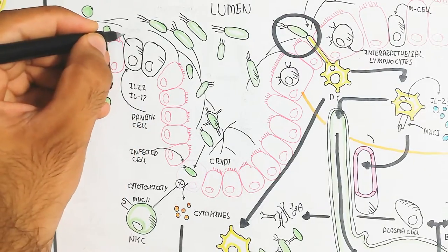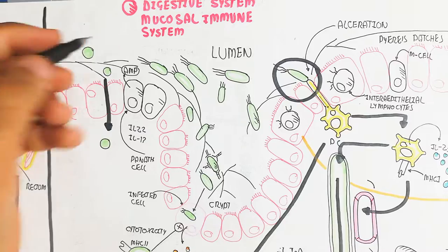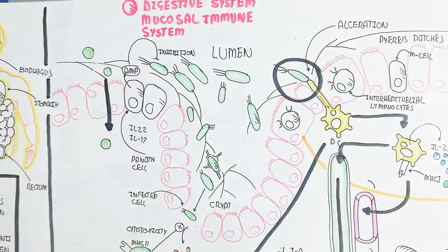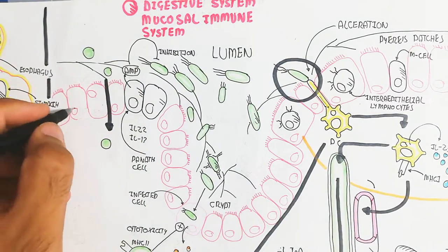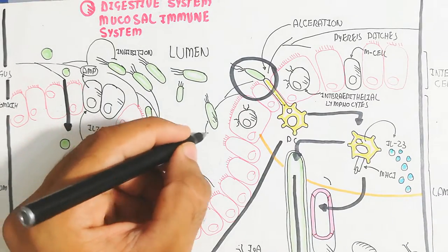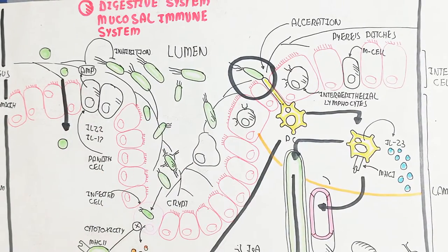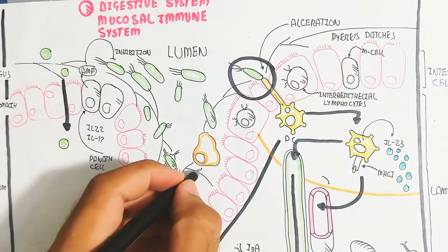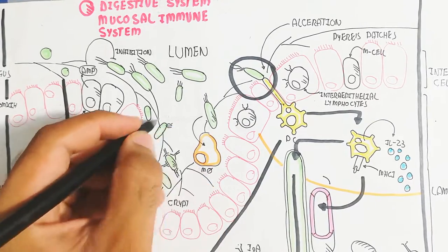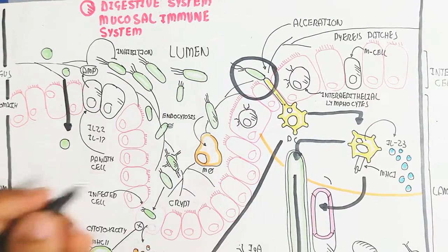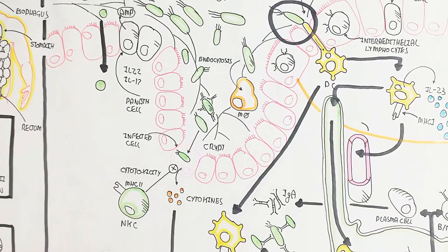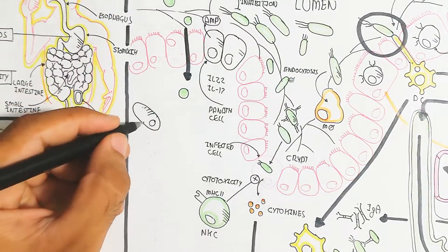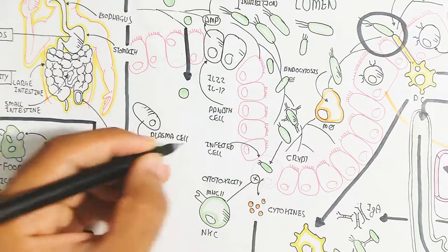Cytotoxicity through MHC class 2 molecules via natural killer cells will also kill the infected cell, through proliferation and recruitment by cytokines. The Paneth cell, after recognition through interleukin-22 and interleukin-17 produced during the inflammatory response, will produce antimicrobial peptides which inhibit and kill bacteria, thereby inhibiting bacterial invasion.